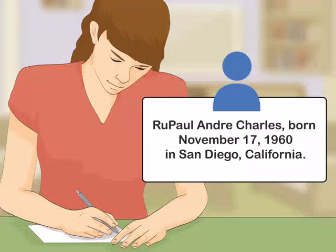How to Outline a Biography. Writing a biography can seem daunting, as you are trying to explore the entirety of someone's life on the page. The key to writing a good biography is outlining it before you dive in. A strong, detailed outline will work through key events chronologically.